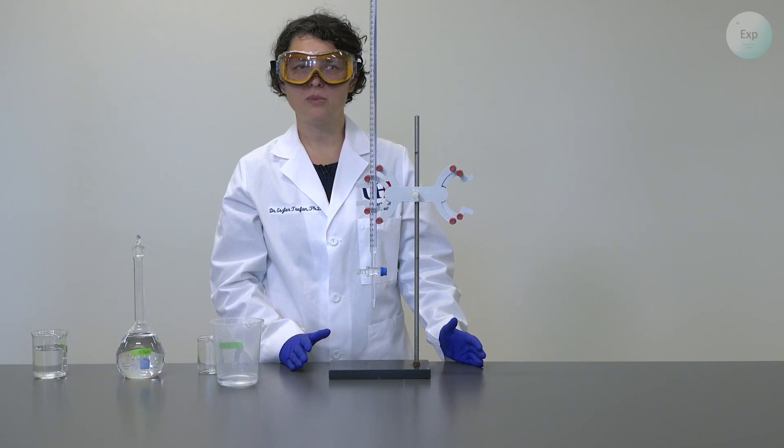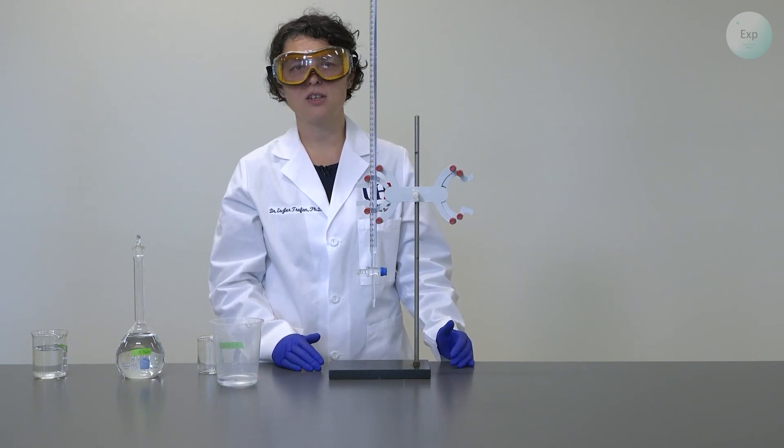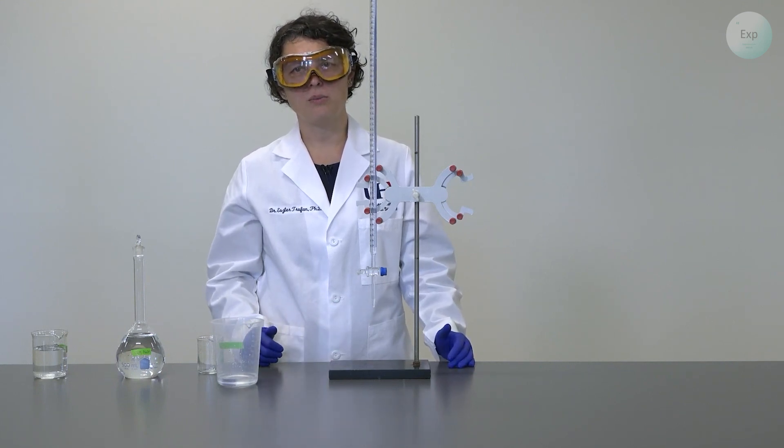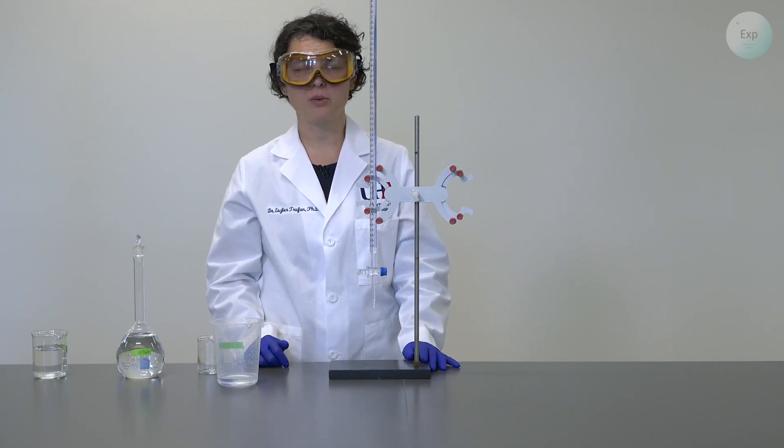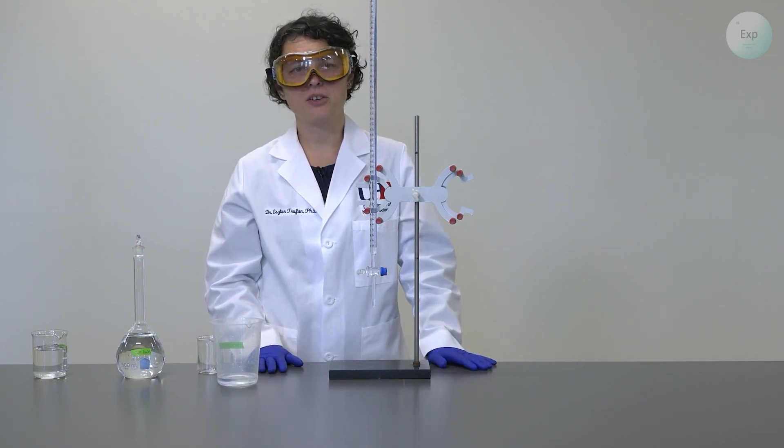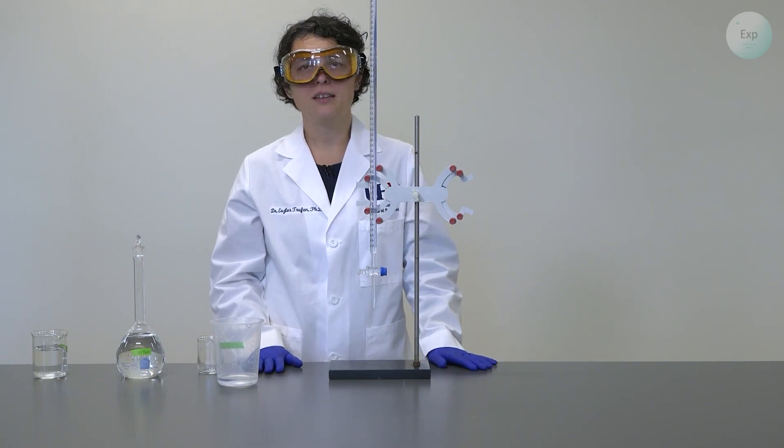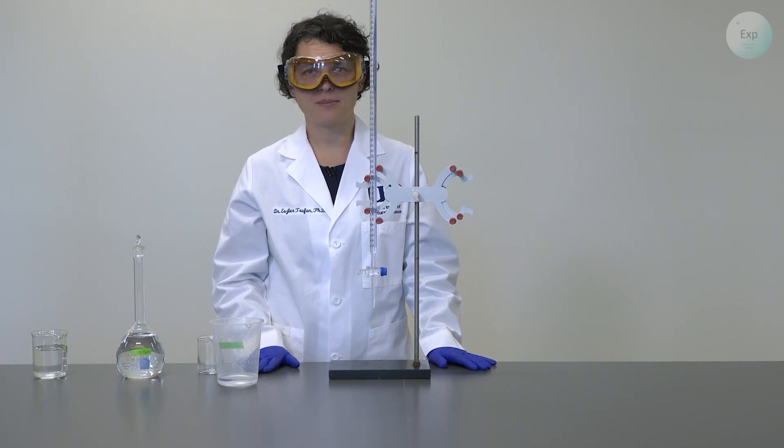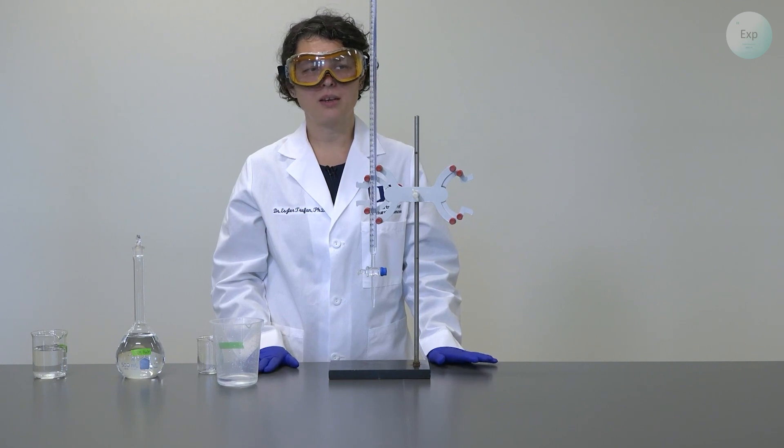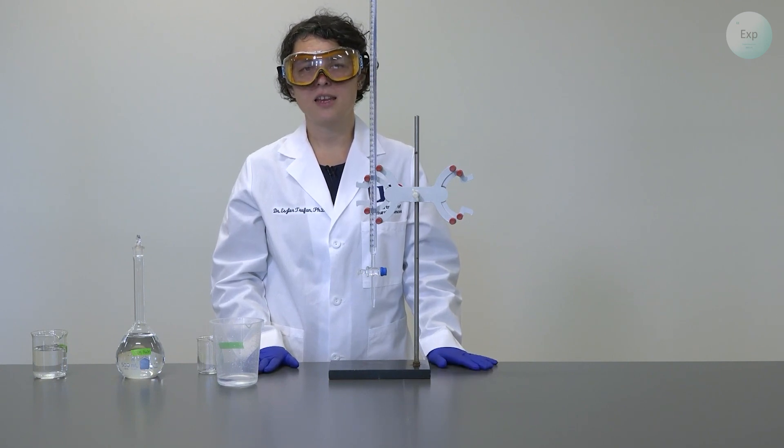This is the volume that we read at the beginning of the titration. And then we monitor the volume that is added throughout the experiment. So to record the volume, we're going to use a very similar technique to what we used with the 10 milliliter graduated cylinder. We are going to have two numbers after the decimal place. The second number will be our estimate.